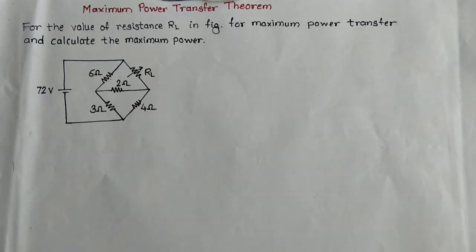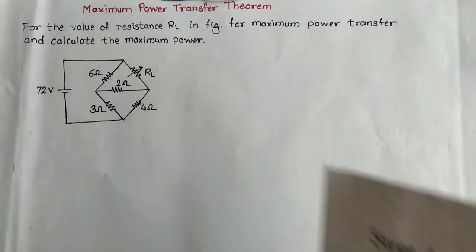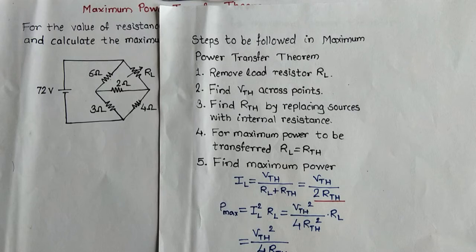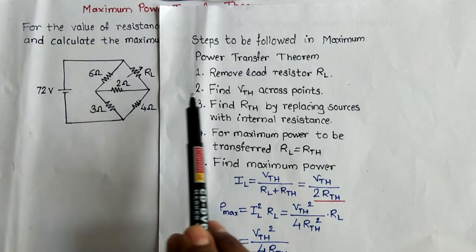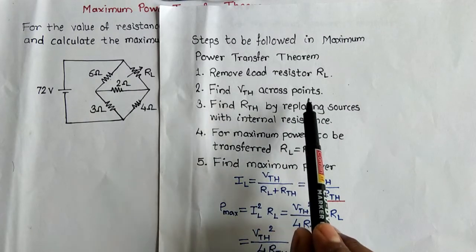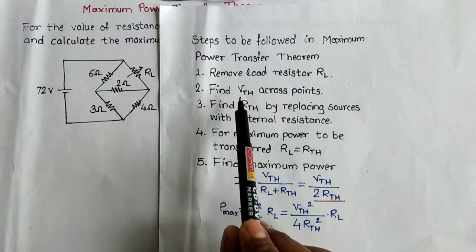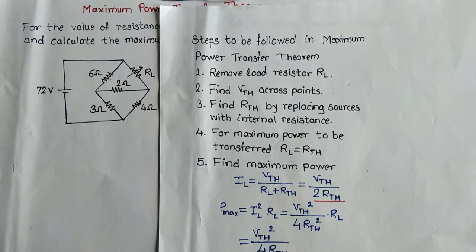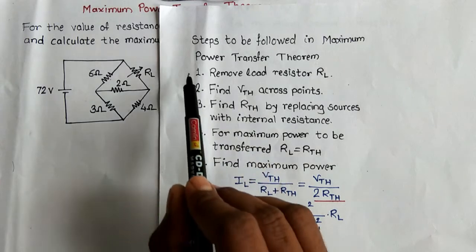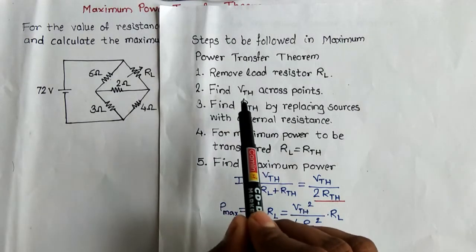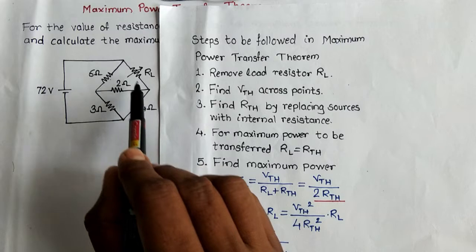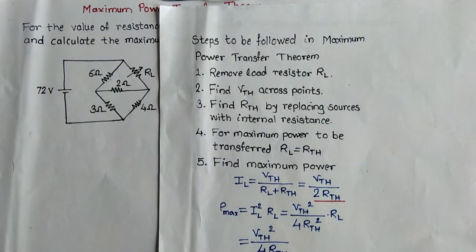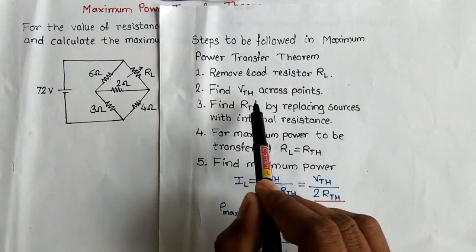This is the circuit. As per the procedure, we have to follow some steps for the maximum power transfer theorem. First, we have to remove the load resistance RL. Then find VTH across those points. VTH is the Thevenin's equivalent voltage, and the procedure for VTH is taken from Thevenin's theorem. So step one is calculation of VTH across the two terminals where we removed RL.